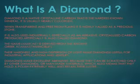Crystallized carbon produced artificially is also called diamond. The name diamond is derived from the ancient Greek word adamas, which means invincible. Their hardness and high dispersion of light make diamonds useful for industrial applications and jewelry. Diamonds make excellent abrasives because they can be scratched only by other diamonds or man-made materials, which also means they hold a polish extremely well and retain their luster.